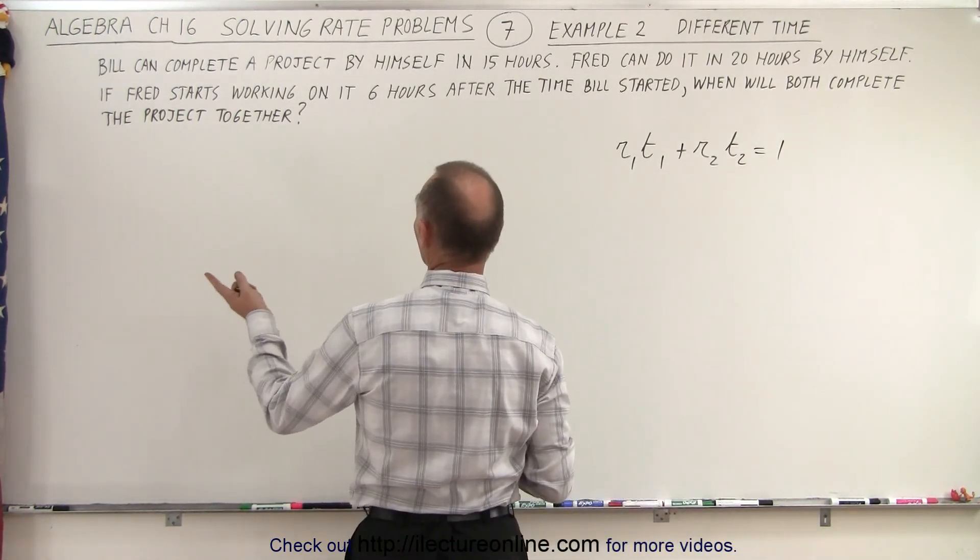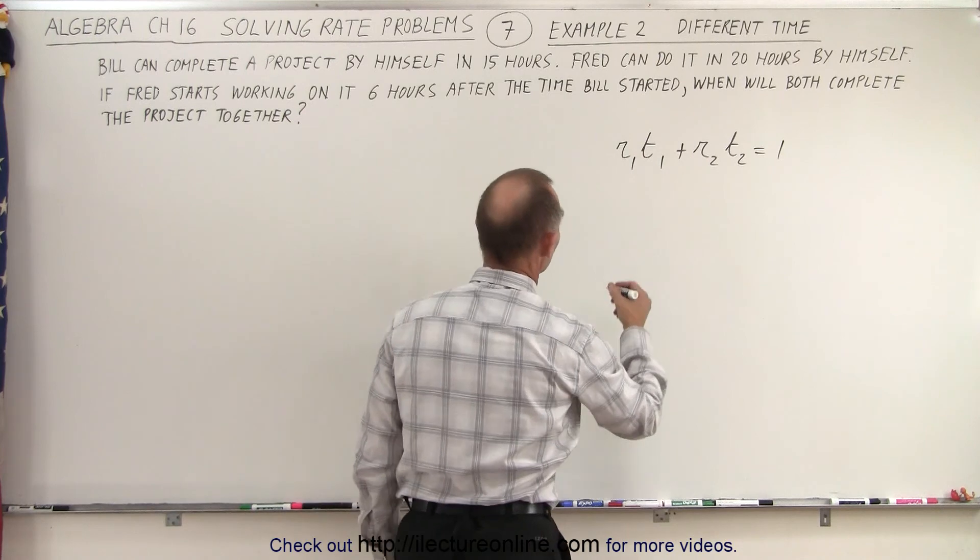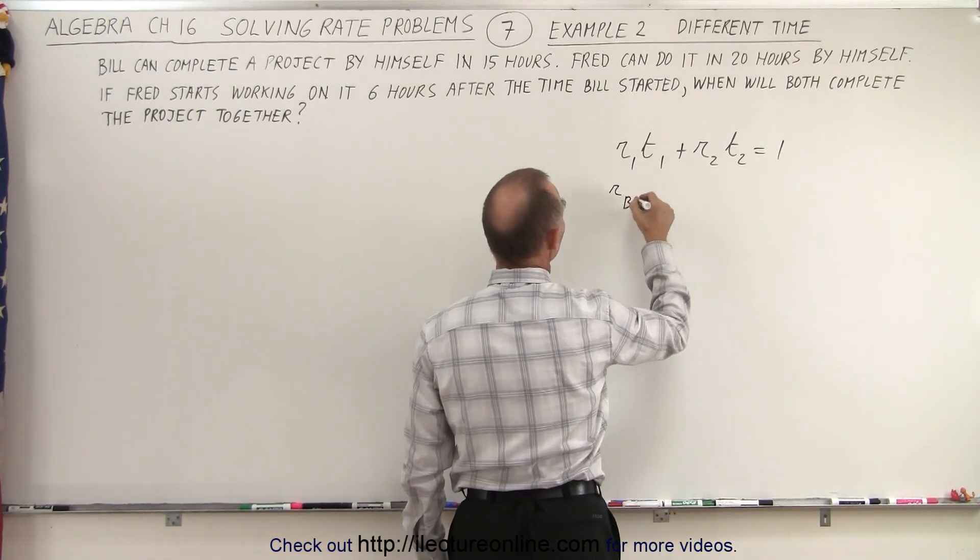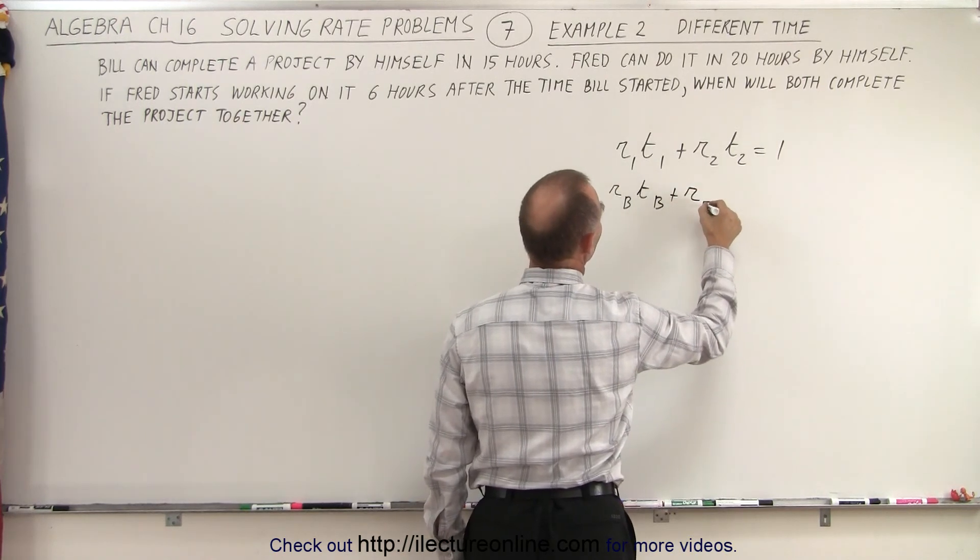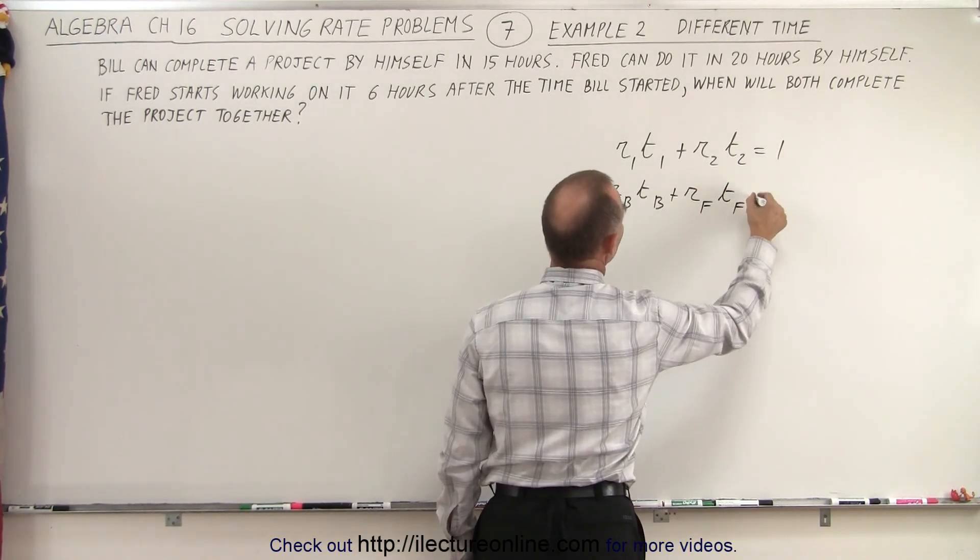And in this case the first person is Bill and the second person is Fred. So the rate of Bill times the time of Bill plus the rate of Fred times the time of Fred equals one.